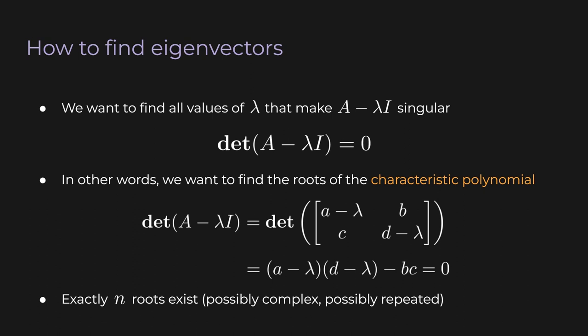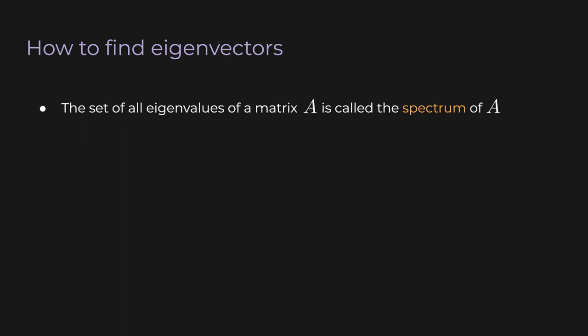Note that eigenvectors aren't unique — you can scale an eigenvector and it'll still be an eigenvector with the same eigenvalue. To keep things simple, you might as well find the eigenvector with norm 1. Now if you have a repeated eigenvalue, you'll end up with a null space of more than one dimension, but put a bookmark there because we'll touch on that later. The set of all eigenvalues of a matrix A is called the spectrum of A, denoted spec A.